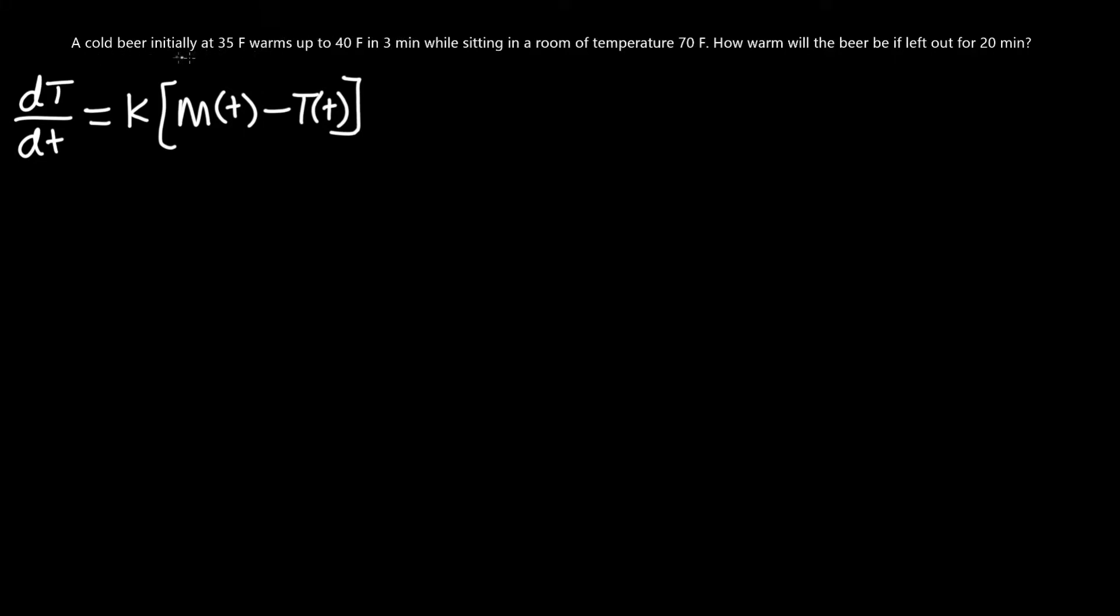Right off the bat we can see initially at 35 degrees Fahrenheit which is the object temperature, therefore T(0), the initial temperature of the object is 35 degrees. Next, we need to know the room temperature right, M(t), it gives it right here, room temperature of 70 degrees, so we just call that M(t) since it's always going to be 70 degrees in this problem. So now we need one more constant before solving the problem and we need T of something. It warms up to 40 degrees in three minutes, meaning after three minutes after the beginning of the test, so T(3) equals 40 degrees Fahrenheit.